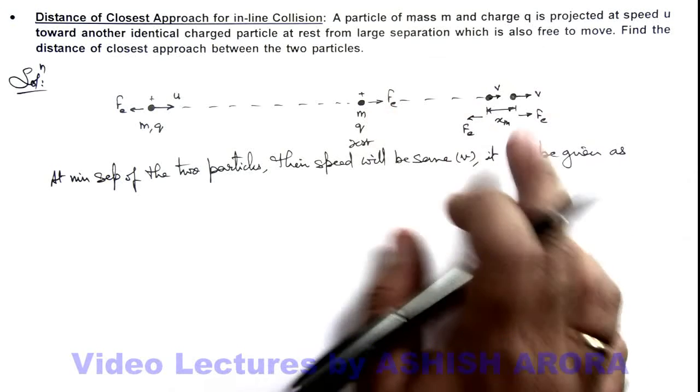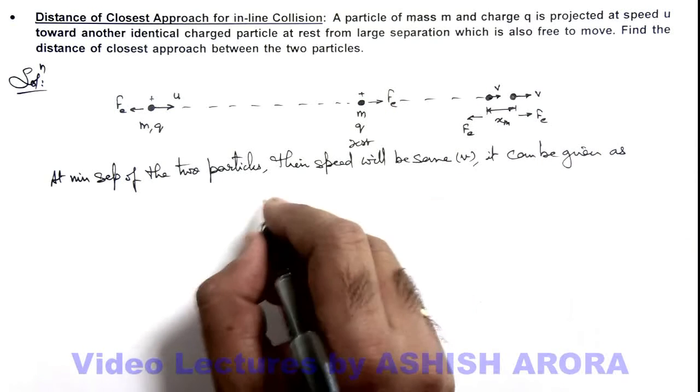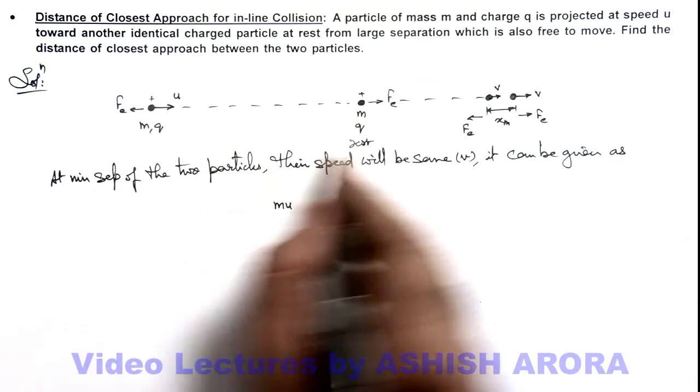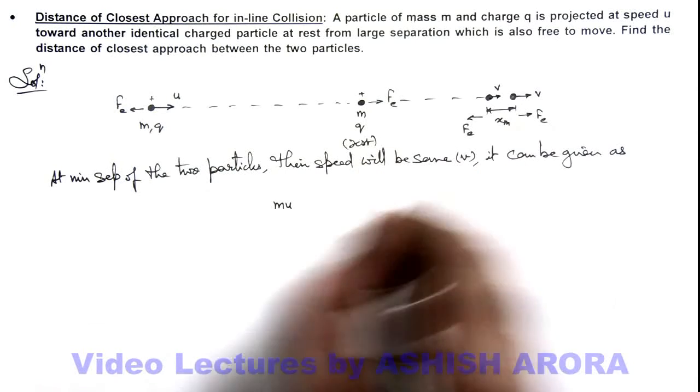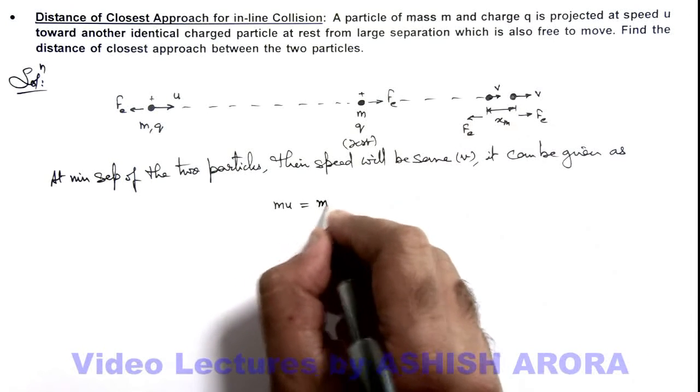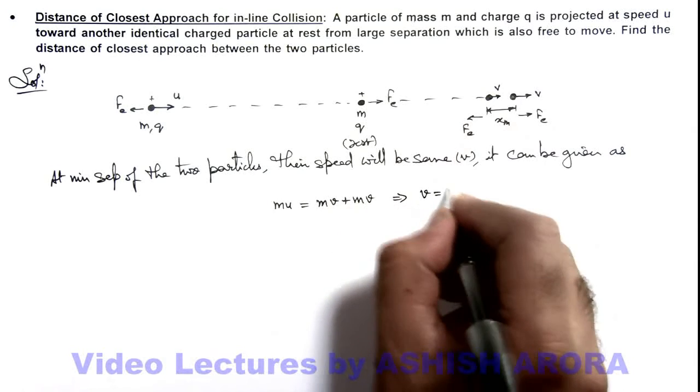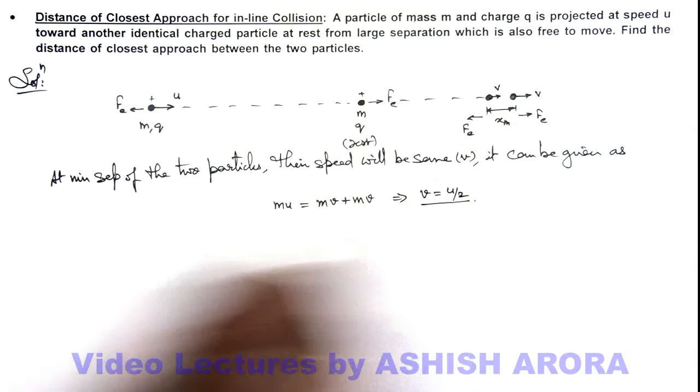In this state we can conserve momentum. Initial momentum of the system is mu as this was initially at rest, and final momentum is mv + mv, which will result v equals u by 2.